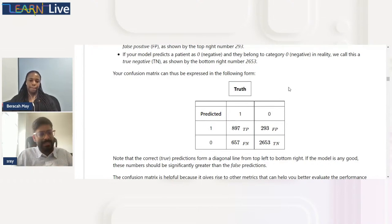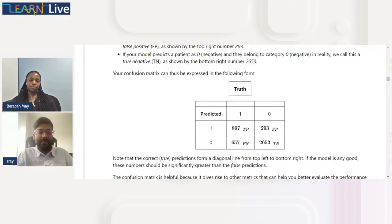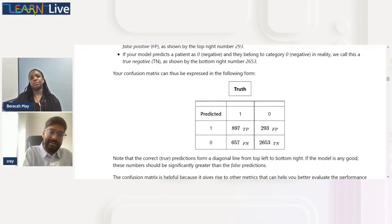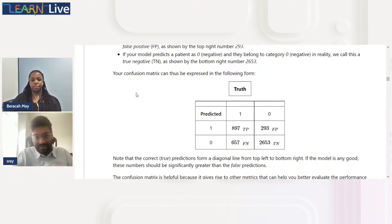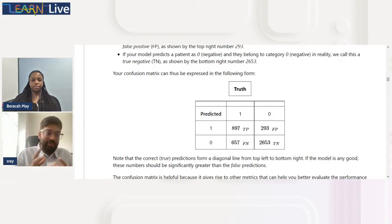A simple example from cancer detection: your main focus is correctly identifying people who have cancer. You care less about false positives — even if someone without cancer starts preliminary medicines, side effects are minor. But if someone with cancer is told they don't have it, they go home and may return years later with fourth-stage cancer, which is non-treatable.